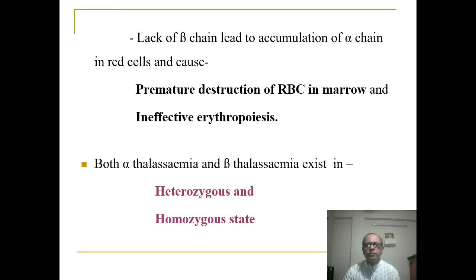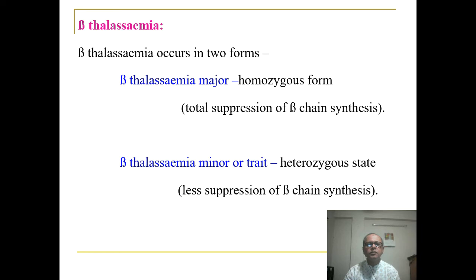Both alpha-thalassemia and beta-thalassemia exist in heterozygous and homozygous states. We will focus on beta-thalassemia, as it is the most common in our population and the most important for your examination. Beta-thalassemia occurs in two forms: beta-thalassemia major, which is the homozygous state with total suppression of beta chain synthesis; and beta-thalassemia minor or trait, the heterozygous state, where there is less suppression of beta chain synthesis.